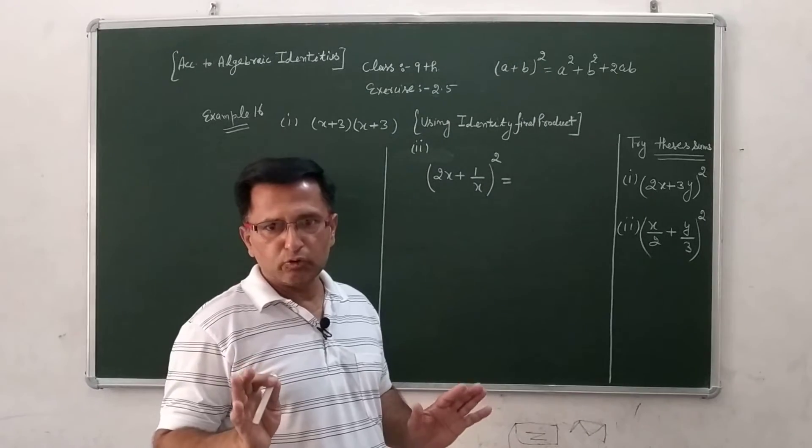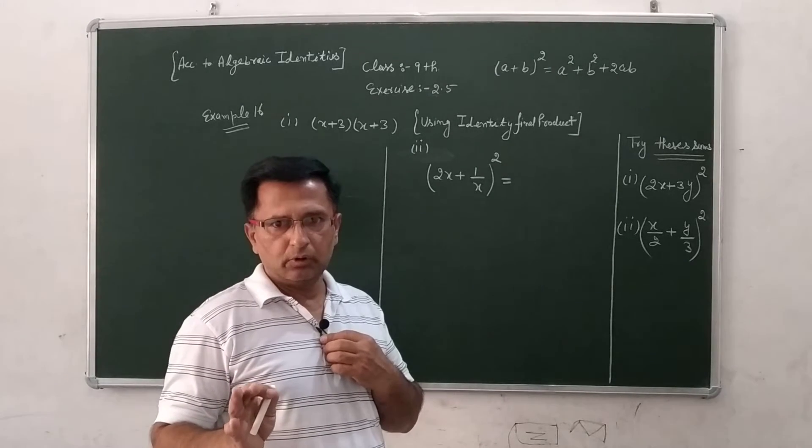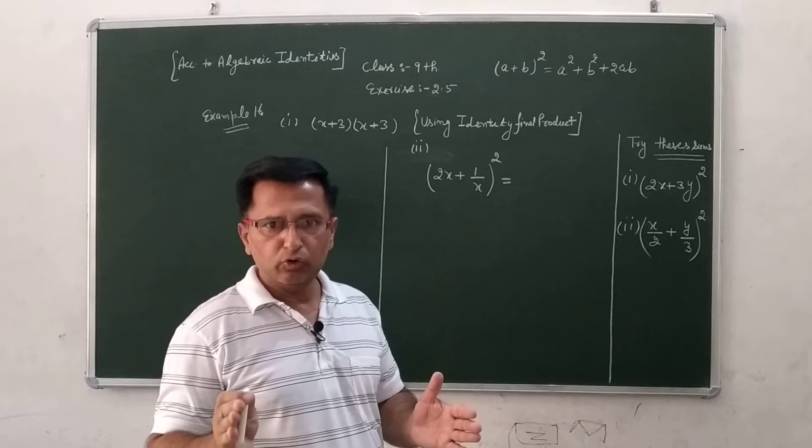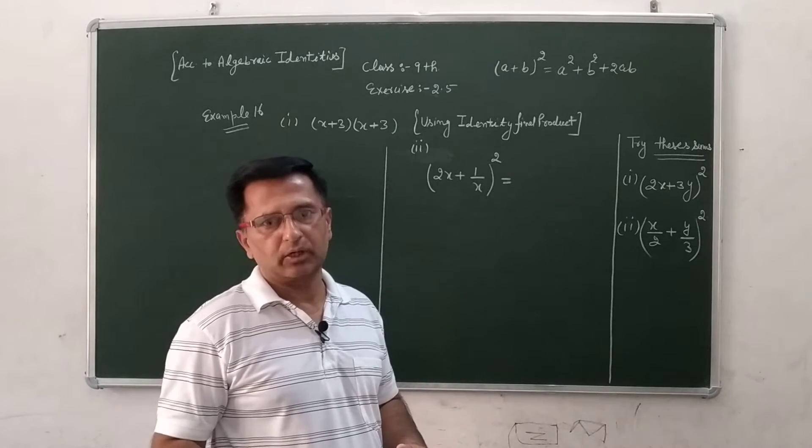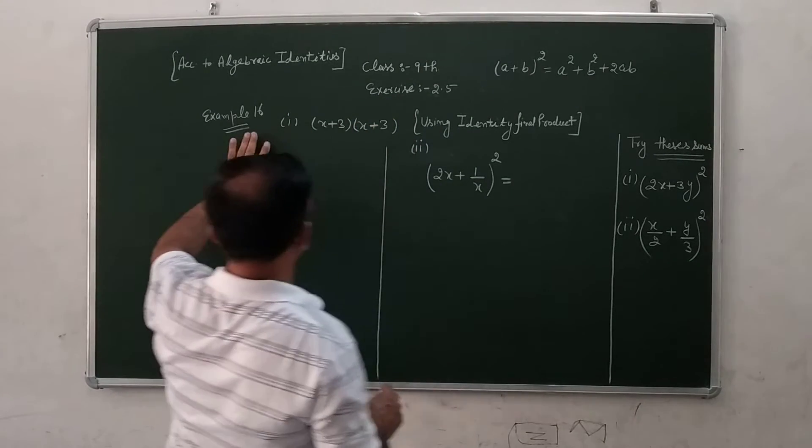Please you learn again and again and write down. If you remember them according to Algebraic Identities, now we have to ask them. So it is the Exercise 2.5, Example 16.